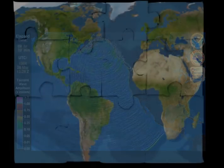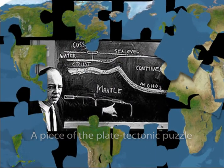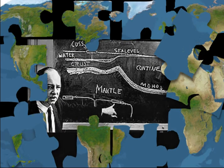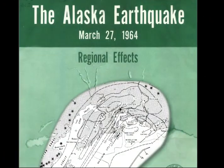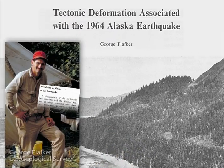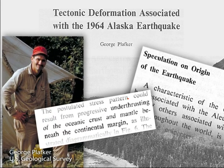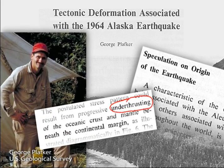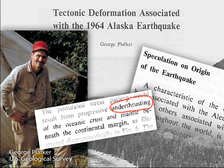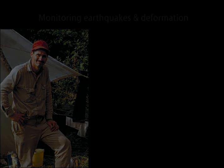In the early 1960s, plate tectonic theory was in its infancy, and subduction was poorly understood. Soon after the earthquake, measurements of land and seafloor deformation taken by United States Geological Survey geologist George Plafker and coworkers led them to propose that under-thrusting of the Pacific Plate beneath Alaska caused the earthquake. This discovery helped establish subduction of oceanic plates beneath continental plates and megathrust earthquakes as fundamental processes of plate tectonics.